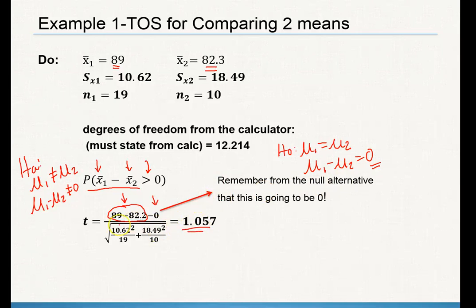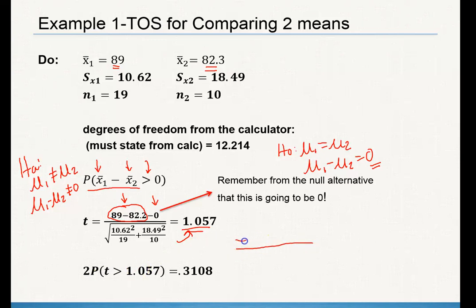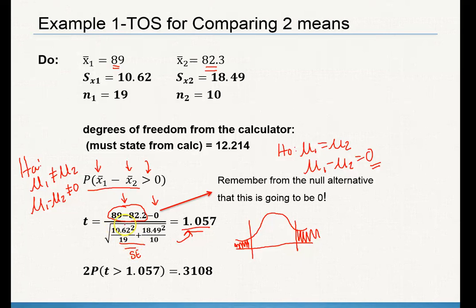Here's your test statistic t — plug all this information into your formula, but I would highly suggest using your graphing calculator; it'll give you your test statistic t and your p-value. Why did I do two times my p-value? Because I don't know if class one did better or class two did better — I'm actually checking both of them, so it's two-sided and I must multiply my p-value by two. Make sure you're taking the variance of one plus the variance of the other, then taking the square root — that's your standard error.